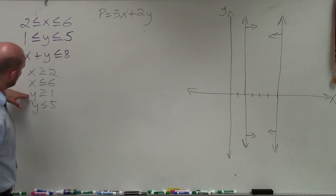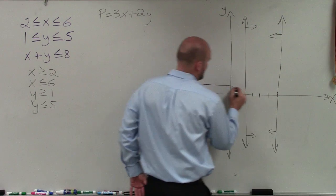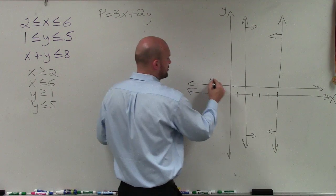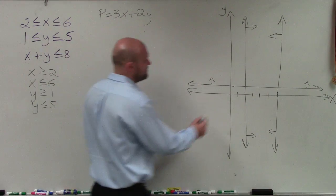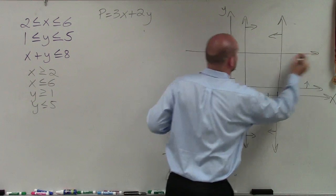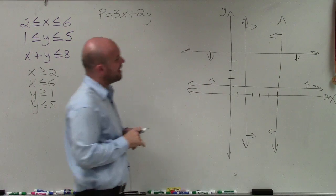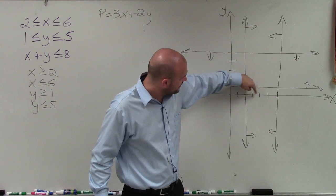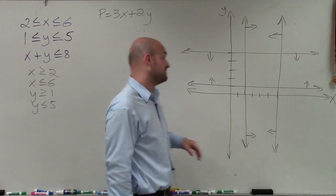Now let's go ahead and do the y coordinates. I have y is greater than or equal to 1, so I go up on the y-axis to 1 and create a horizontal line. Values greater than 1 will be going up. Then my last one is y is less than or equal to 5, so I go up to 5 and make a horizontal line there, choosing points facing down for y is less than or equal to 5. So now I have this nice square that's going to be my feasible region.